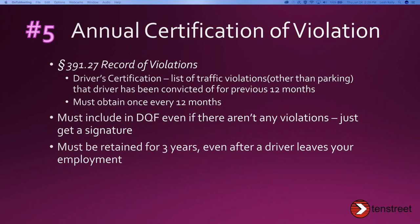The annual certification of violations — found at section 391.27 — is a list of traffic violations other than parking that the driver has been convicted of for the previous 12 months. The regulations require that you get this every 12 months. You need to have it in the DQF even if there aren't any violations — just have a statement and a signature in there saying there aren't any. It's something you have to keep track of and watch the dates on.